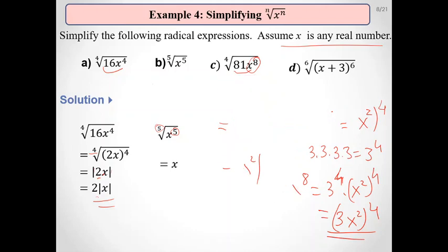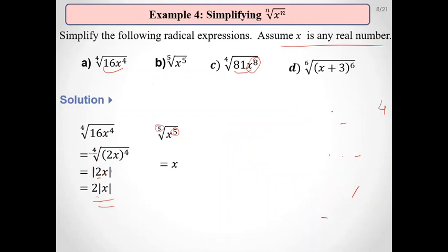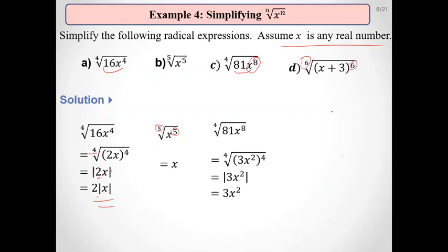For the sixth root of (x + 3)⁶: the index is 6 and the power is 6 — it's an even number — so the answer is the absolute value of x + 3.